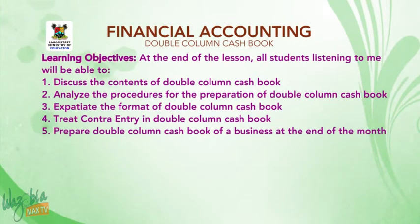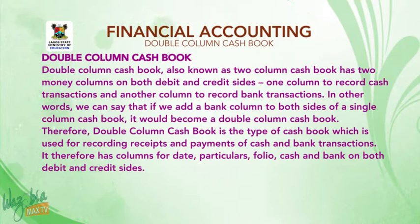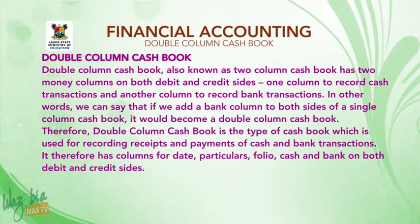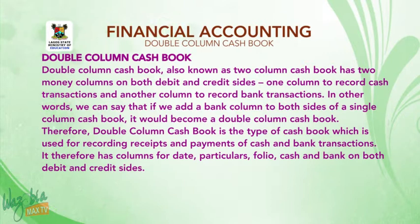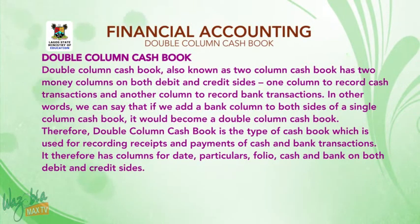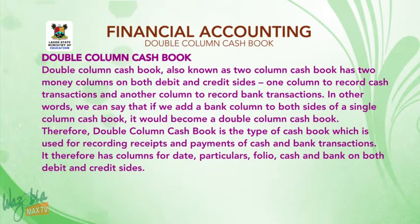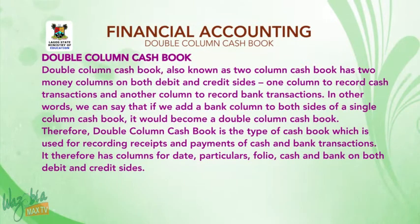5. Prepare double-column cashbook of a business at the end of the month. Double-column cashbook, also known as two-column cashbook, has two money columns on both debit and credit sides — one column to record cash transactions and another column to record bank transactions. If we add a bank column to both sides of a single-column cashbook, it will become a double-column cashbook. Therefore, double-column cashbook is the type of cashbook used for recording receipts and payments of both cash and bank transactions.